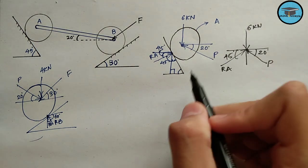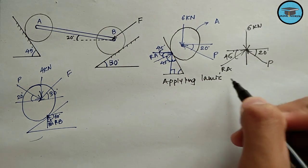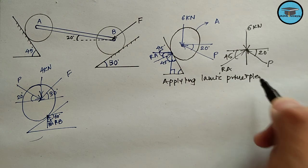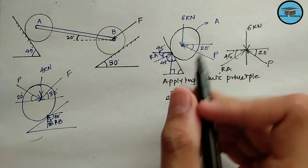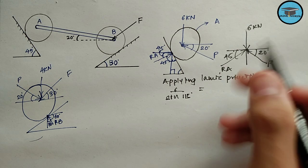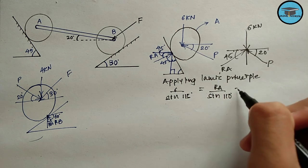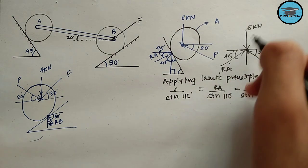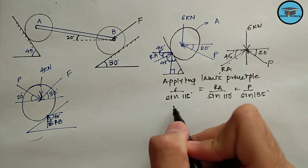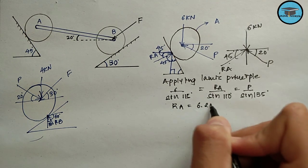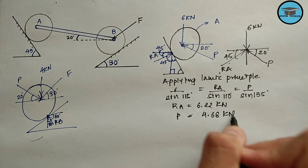Applying Lami's principle: 6 divided by sine of 115 degrees equals R_A divided by sine of 110 degrees equals P divided by sine of 135 degrees. Equating these, we get the value of R_A as 6.22 kN and the value of P as 4.68 kN.